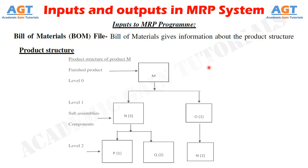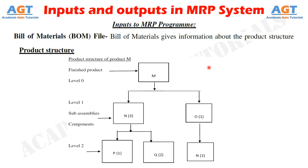The Bill of Materials file is often called the product structure file or product tree because it shows how a product is put together. It contains information to identify each item and the quantity used per unit. For example, in the product structure of product M, sub-assembly N appears at both level 1 and level 2. When a computer reads a BOM starting from level 0 downward, if an item appears at more than one level, its total units cannot be determined until the computer scan reaches the lowest level, resulting in inefficiency.